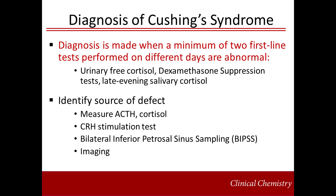In 2008, the Endocrine Society published Clinical Practice Guidelines for the Diagnosis of Cushing's Syndrome. These guidelines are for the evaluation of individuals with clinical suspicion of Cushing's syndrome without exogenous glucocorticoid use. For the diagnosis of Cushing's syndrome, these guidelines recommend the use of two sequential first-line tests: urinary free cortisol, dexamethasone suppression tests, and/or a late-evening salivary cortisol.